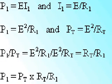For N resistors in parallel, the total power is therefore equal to P1 plus P2 plus P3 up to PN. If all the resistors in a parallel circuit are of equal value, then the total power is equal to N, the number of resistors, times the power dissipated in each resistor.